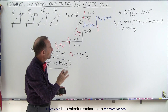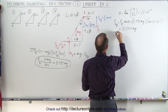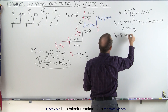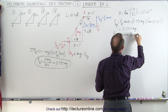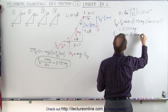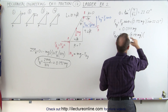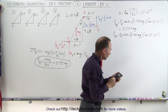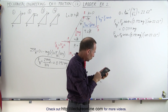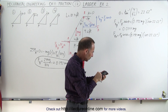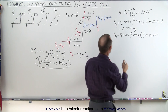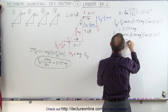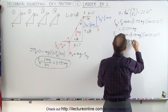We do the same for the component in the x direction. Fb in the x direction equals Fb times the cosine of theta, which is 0.192mg times the cosine of 22.62 degrees. That equals 0.177mg.